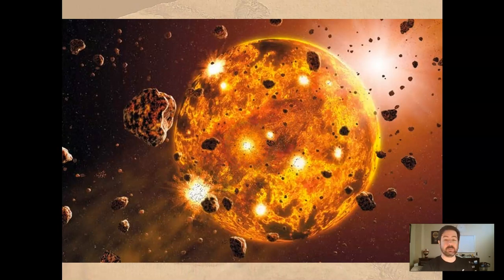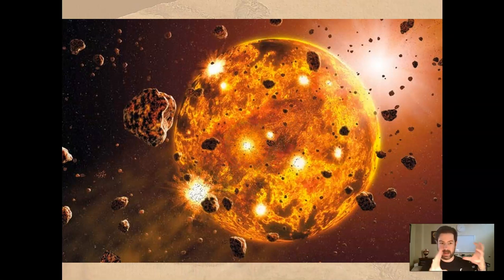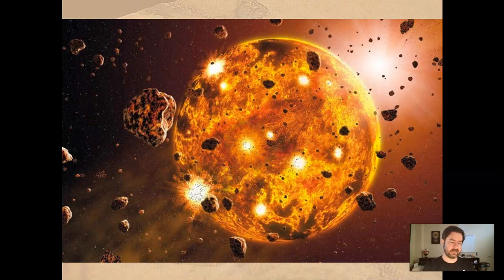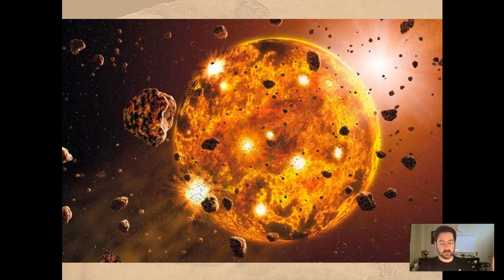So this is probably what early Earth looked like — big, hot, molten ball of magma and lava. Spherical, because that's how gravity works, not flat. I surprise myself every time now that I have to say that.